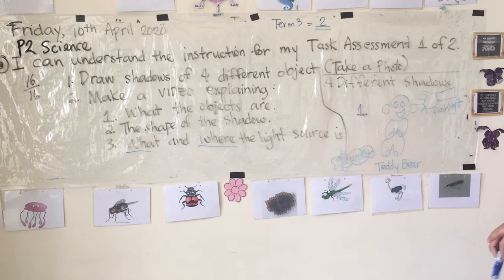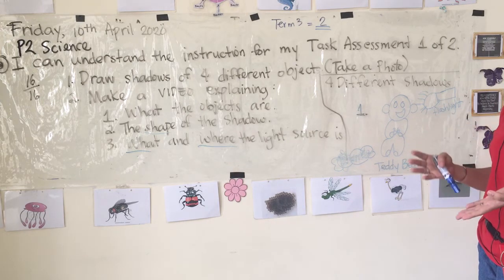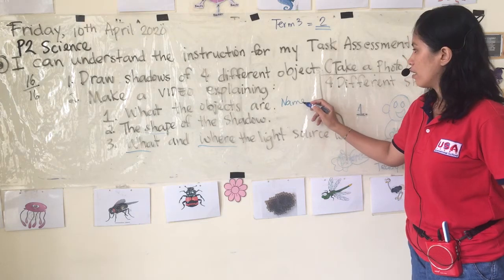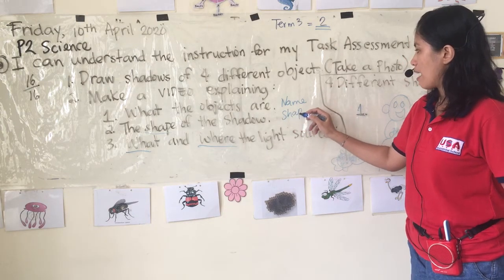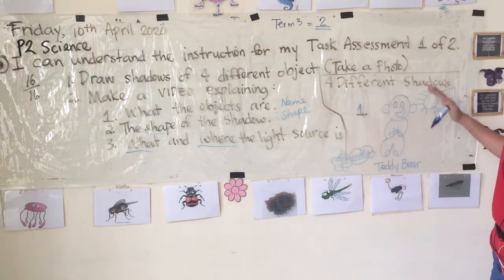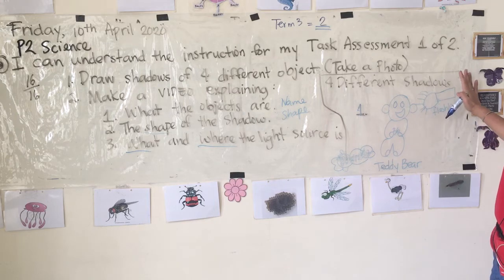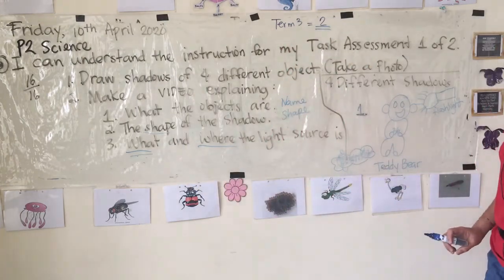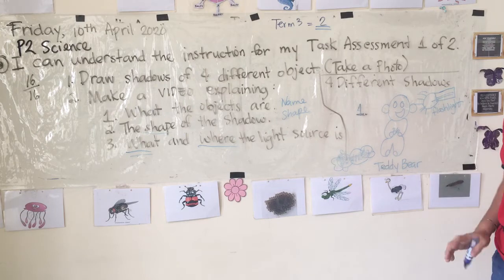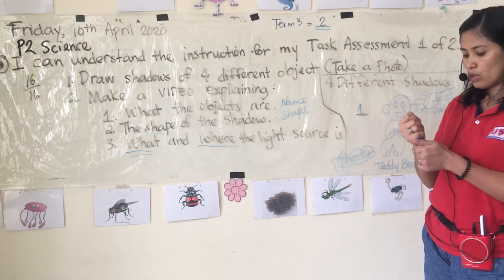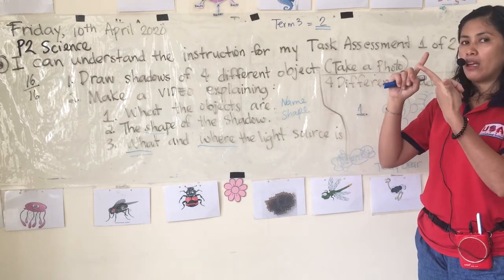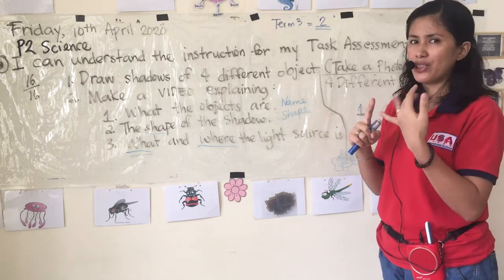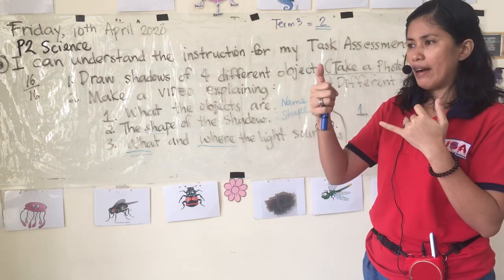So when you introduce your objects in the video, you have to mention the name of the object, its shape, where the source of light is located — for example, it's on the upper right side of the teddy bear — and what source of light you use, for example a flashlight. To review, there are many different sources of light: the sun, a torch, a flashlight, a candle, a lighter, matches, and plenty more.